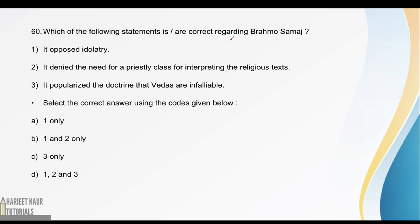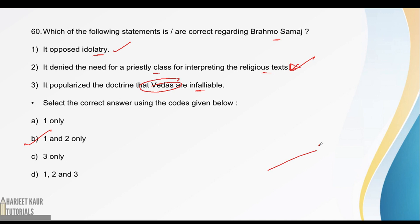Next: which of the following statements are correct regarding Brahmo Samaj? First, it opposed idol worship — this is correct. Second, it denied the need for a priestly class to interpret religious texts — Brahmo Samaj was against the priestly class, so this is also correct. Third, it popularized the doctrine that the Vedas are infallible — nothing such is mentioned, so this statement is wrong. That's all for today — like, share, and subscribe.